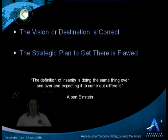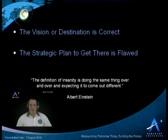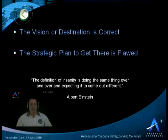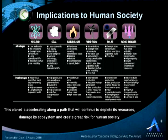So the vision or destination is correct, but the strategic plan to get there is flawed. As Albert Einstein said, the definition of insanity is doing the same thing over and over expecting to come out different. That's what we're caught up in now as we look at our leaders in governments and private institutions debating this and implementing plans. We're doing the same things over and over again, but that goal we're trying to achieve is not being advanced toward. Simply put, the planet is accelerating along a path that will continue to deplete its resources. Technologies like nuclear, coal, natural gas, and others are either intermittent in production, have extremely high energy production costs, use harmful materials, or damage our ecosystem and create permanent hazards that will last for generations — which is unacceptable.